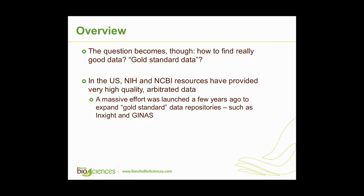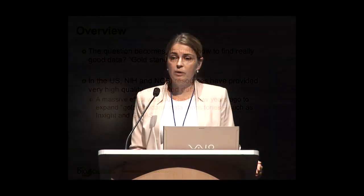The question then becomes: how do you find really good data? If you're working on a project looking at a set of controls and trying to find complementary datasets, where do you go? In the United States, NIH and NCBI resources are what people traditionally look to for high quality — what I call arbitrated data — because these venues spend time and money to ensure the data they publish is reliable.